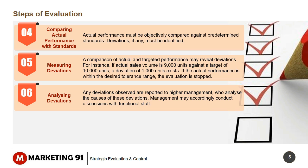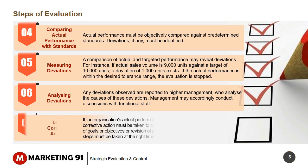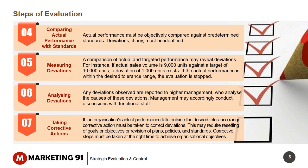Sixth, analyzing deviations: any deviations observed are reported to higher management, who analyze the cause of these deviations. Management may accordingly conduct discussions with functional staff. Taking corrective actions: if an organization's actual performance falls outside the desired tolerance range, corrective action must be taken to correct deviations. This may require resetting of goals or objectives, or revisions of plans, policies and standards. Corrective steps must be taken at the right time to achieve organizational objectives.